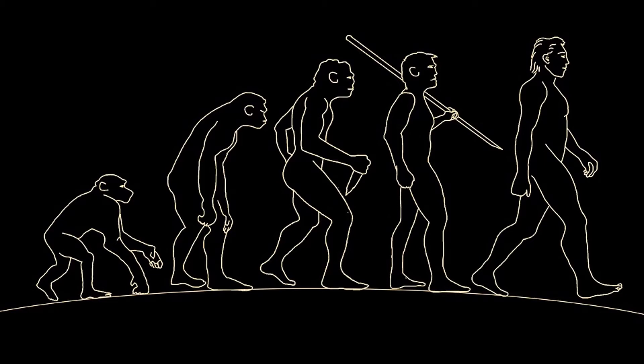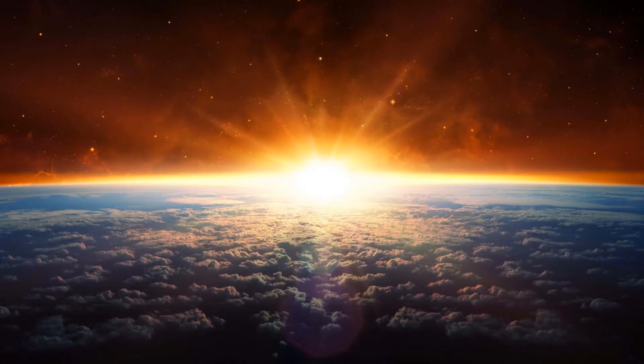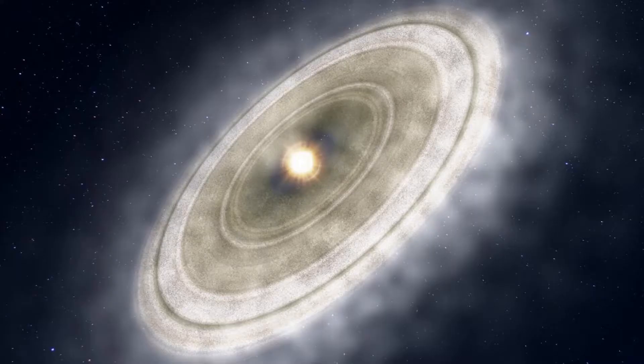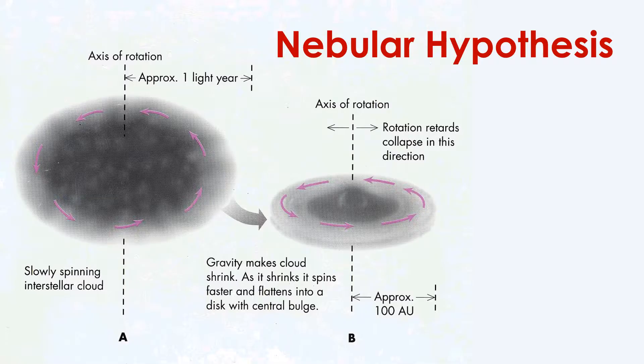Historical geology can't help us answer some of these more existential questions, but it can shed light on the origin of our planet and all of the changes that have occurred on it over time. There are a number of hypotheses for the origin of the solar system. The leading theory is called the nebular hypothesis.